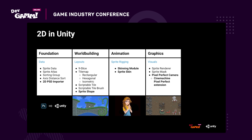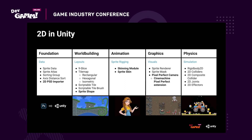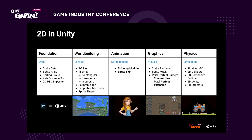Pixel perfect camera also works with Cinemachine via the pixel perfect camera extension. And of course physics — with 2D physics we provide a rigid body based physics system for 2D. This comes with colliders, a composite collider that combines other colliders for better performance, and a large collection of 2D joints and effectors.